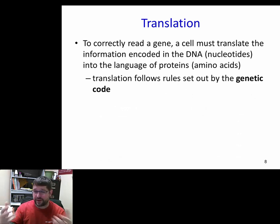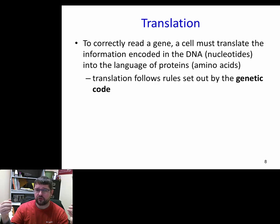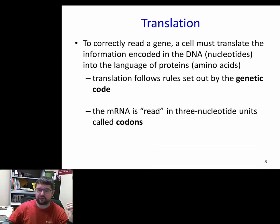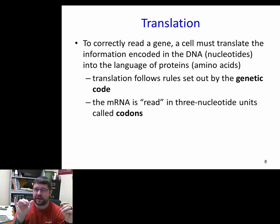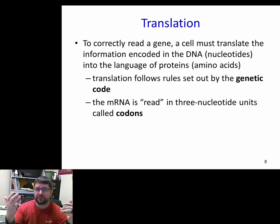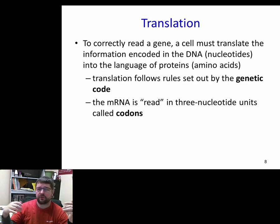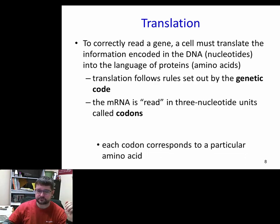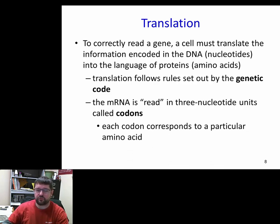The way all organisms on this planet translate their DNA is by what we call a genetic code or a codon — three nucleotides are read as a single reading frame. You take your messenger RNA strand and every three nucleotides is what we call a codon. Every three nucleotides is associated with a single amino acid, so the messenger RNA is read three nucleotides at a time, one codon at a time.